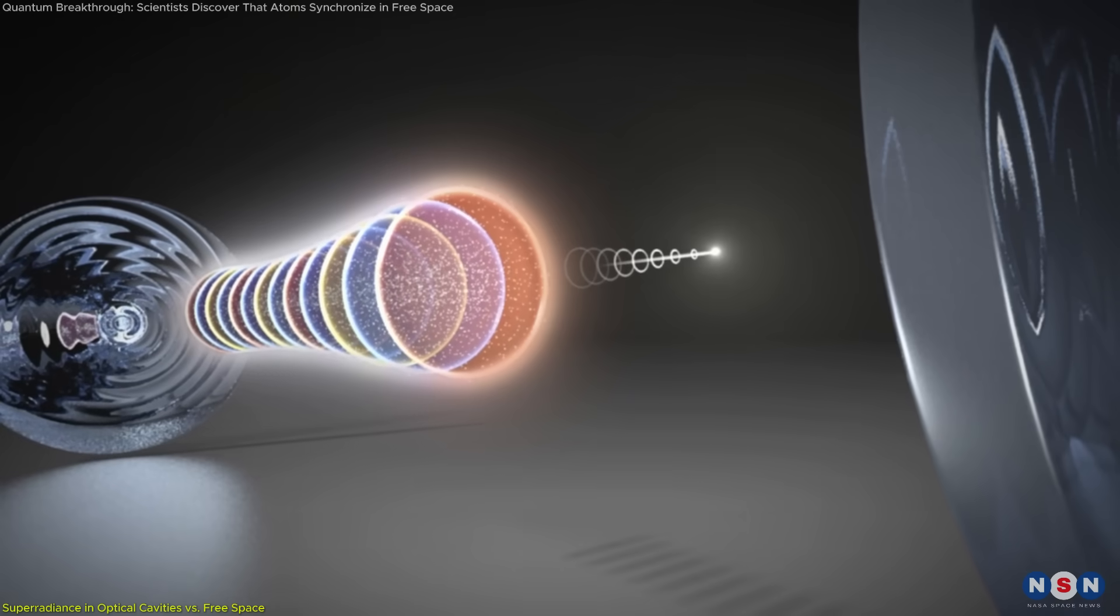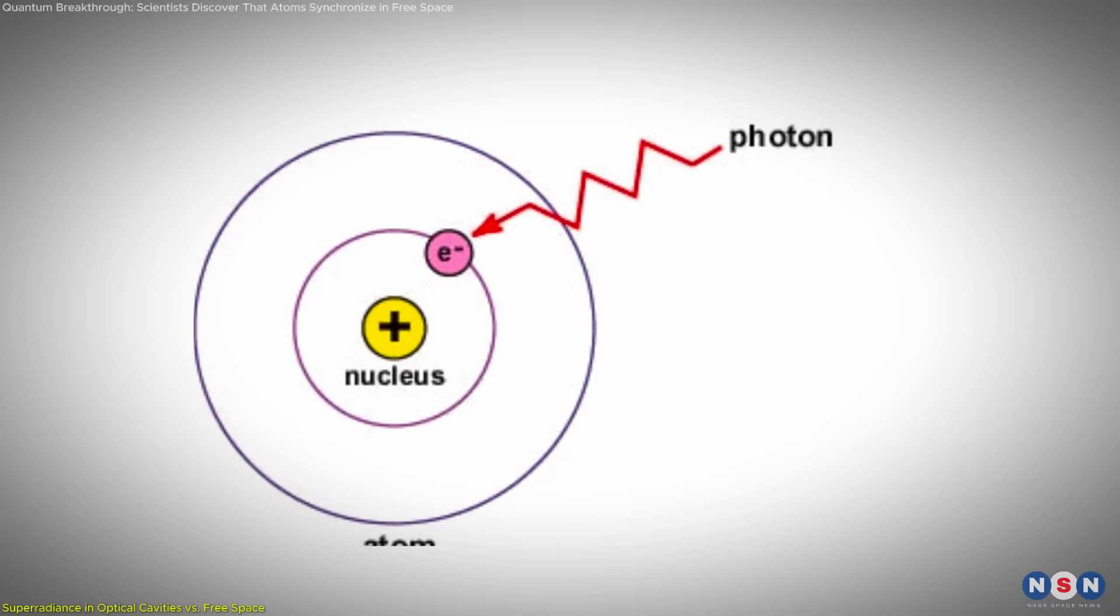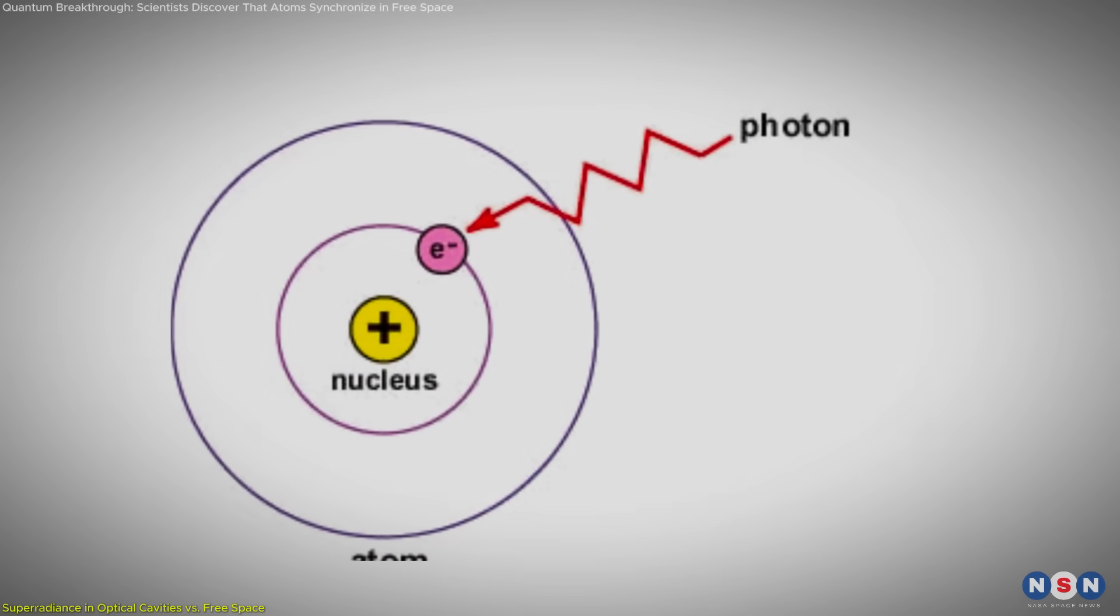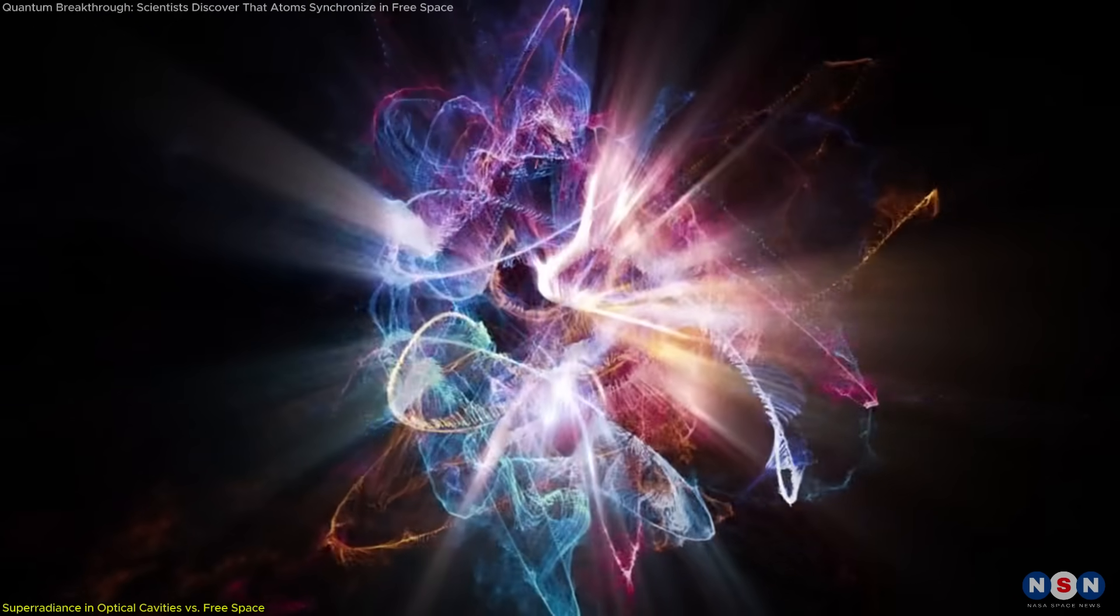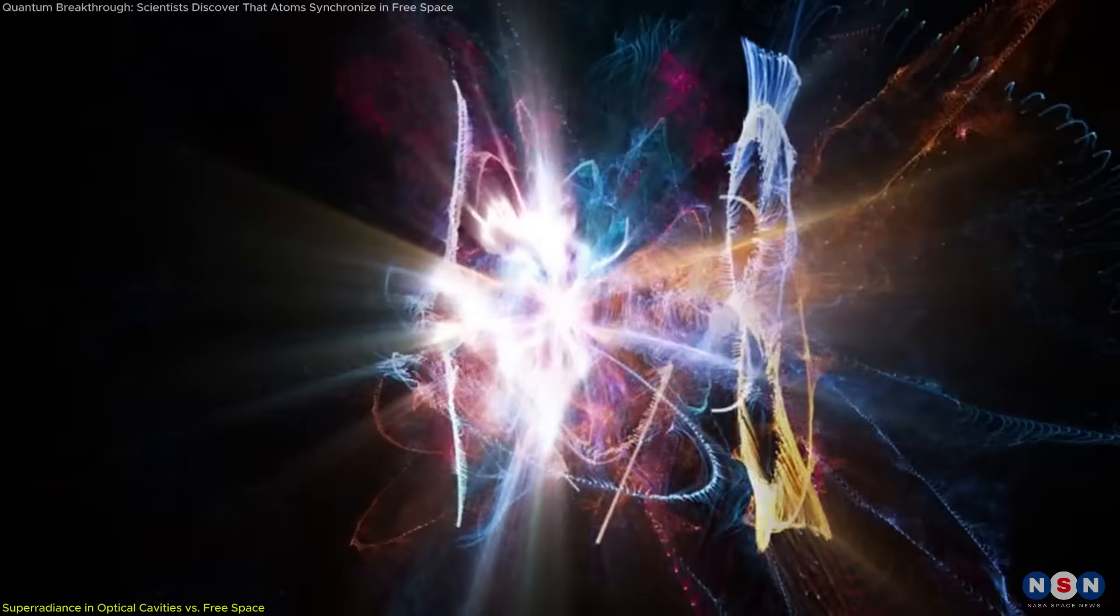Superradiance, at its core, is about synchronization. When atoms interact with photons in confined spaces, such as optical cavities, they emit light in perfect unison, producing a burst of energy far more intense than if each atom acted alone.